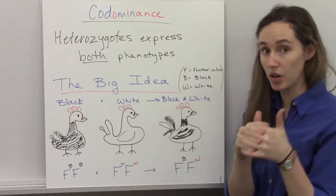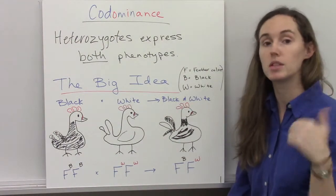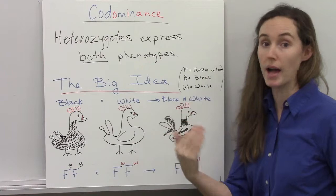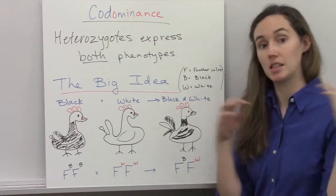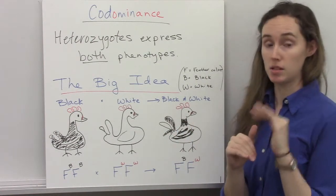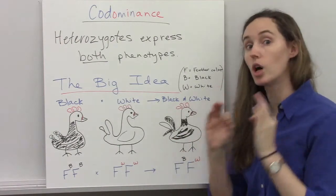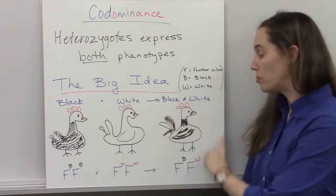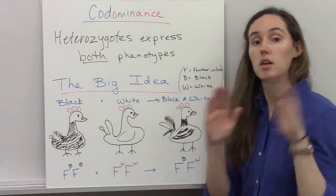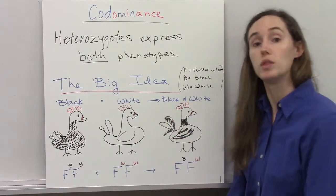the offspring, the heterozygotes, would have both black and white feathers. That's different than incomplete dominance. If we were following incomplete dominance, the offspring would be gray. But since it's codominance, you have both phenotypes completely and in their fullness expressed.